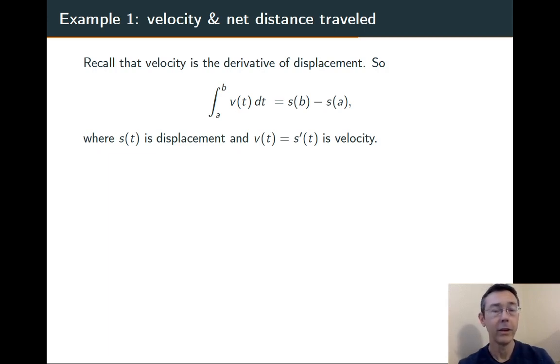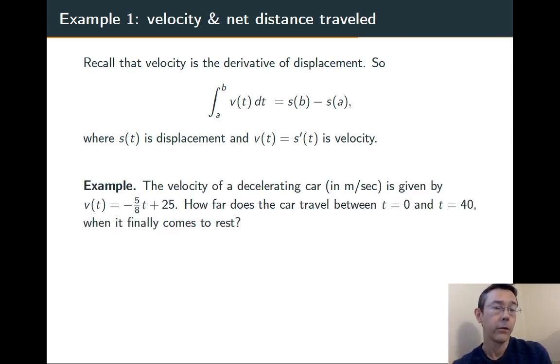First example is velocity and distance traveled. Since velocity is a derivative of displacement, if you integrate velocity over an interval, you get the net change in displacement. Here's a sample problem.